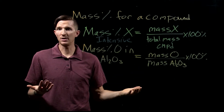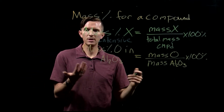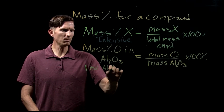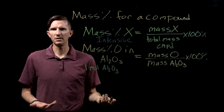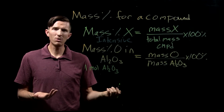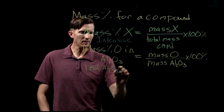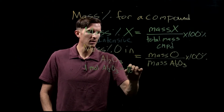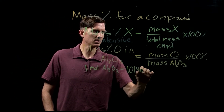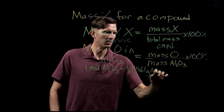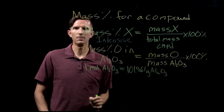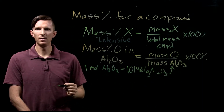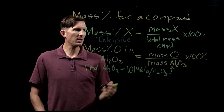An intensive property means it doesn't matter how much I have. So what we're going to do is say: what if I have one mole of aluminum oxide? If I know I have one mole of aluminum oxide, I know its mass — it's the molar mass of aluminum oxide, 101.961 grams. So I now know the total mass of my aluminum oxide.